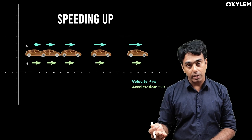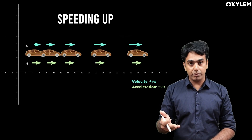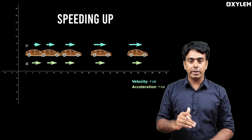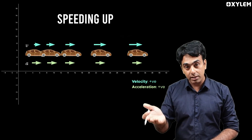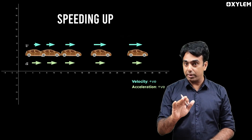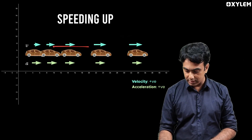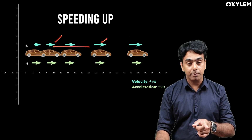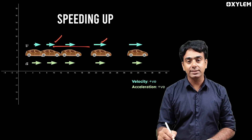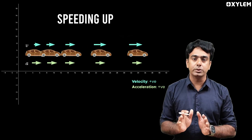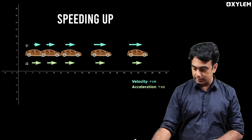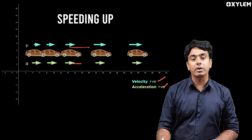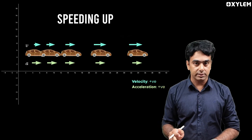Acceleration is calculated as later velocity minus earlier velocity divided by time taken. Obviously, if later velocity is greater than earlier velocity, then you will get a positive value. That means acceleration is positive. Velocity is also positive, meaning both acceleration and velocity are along the same direction in this case.